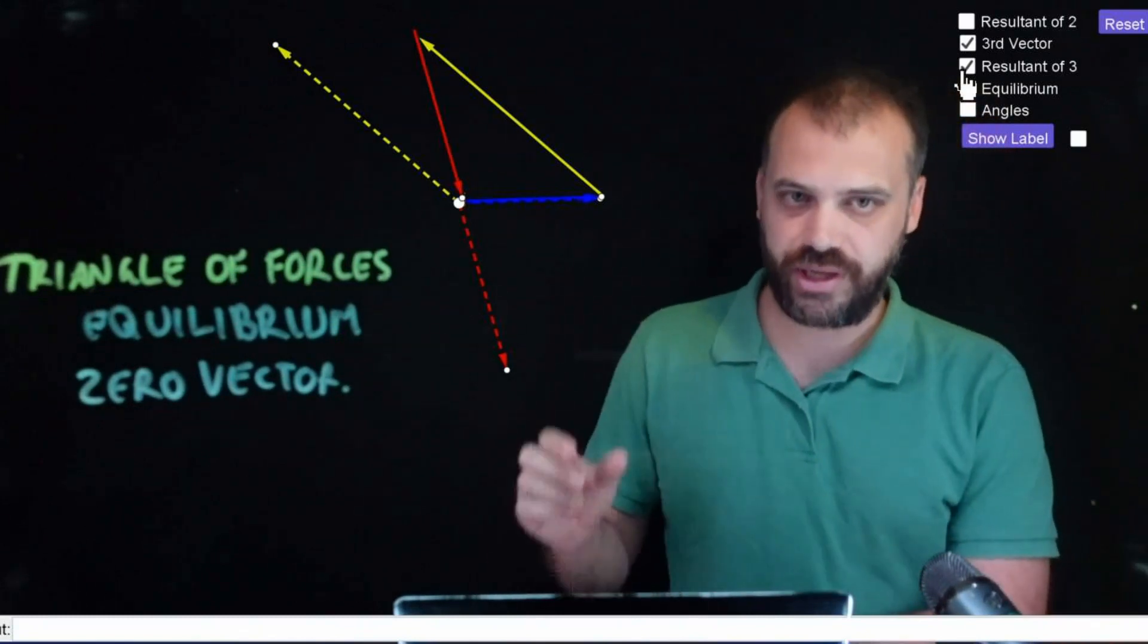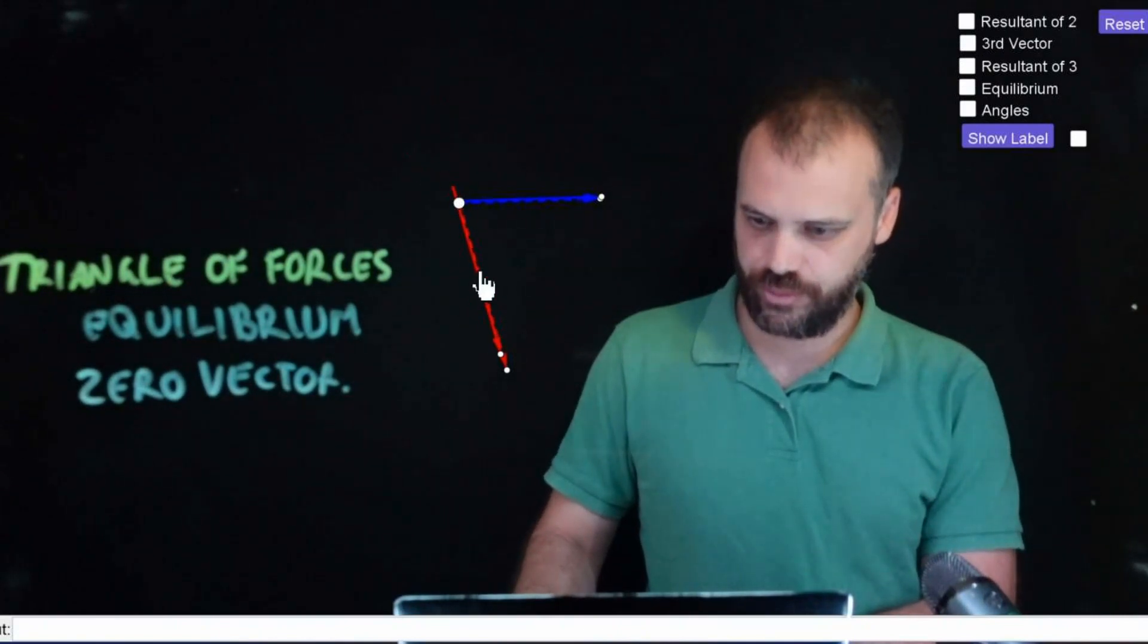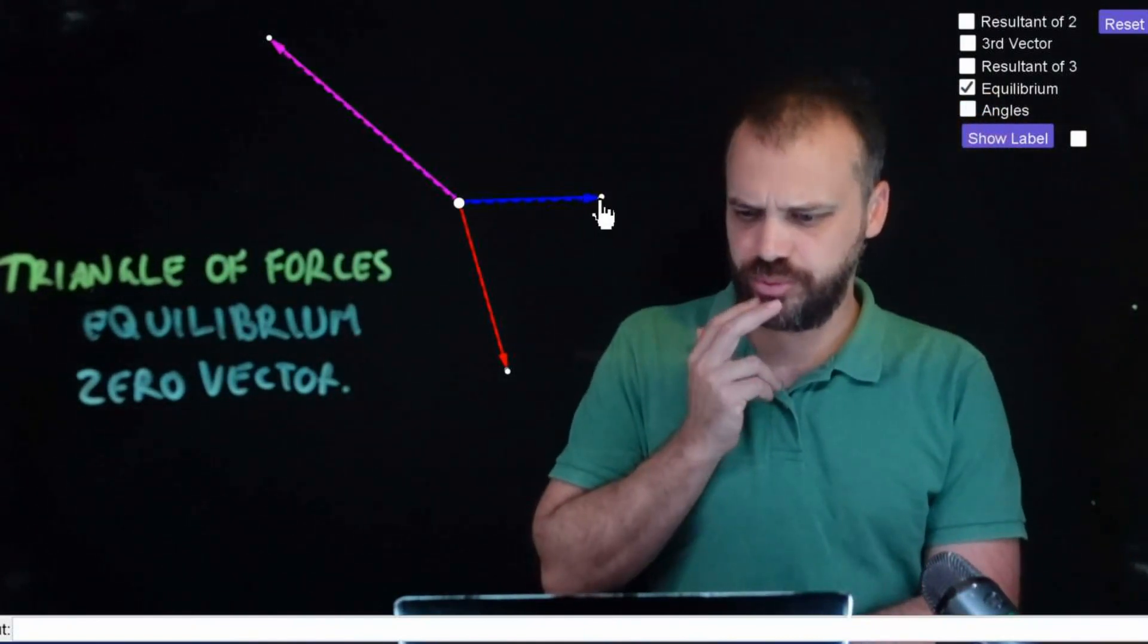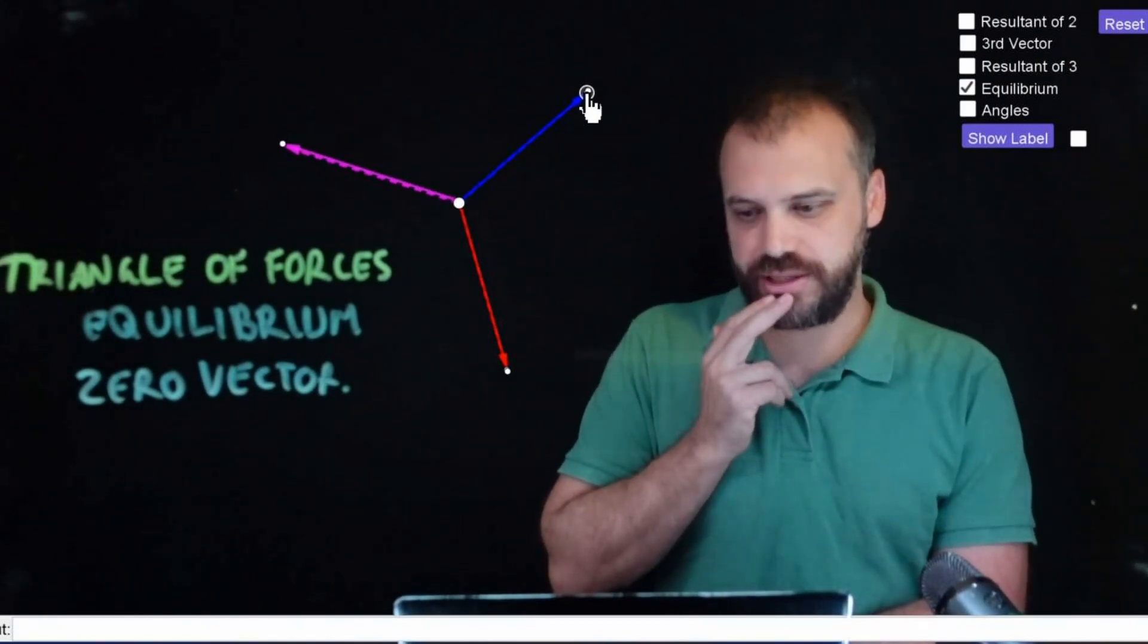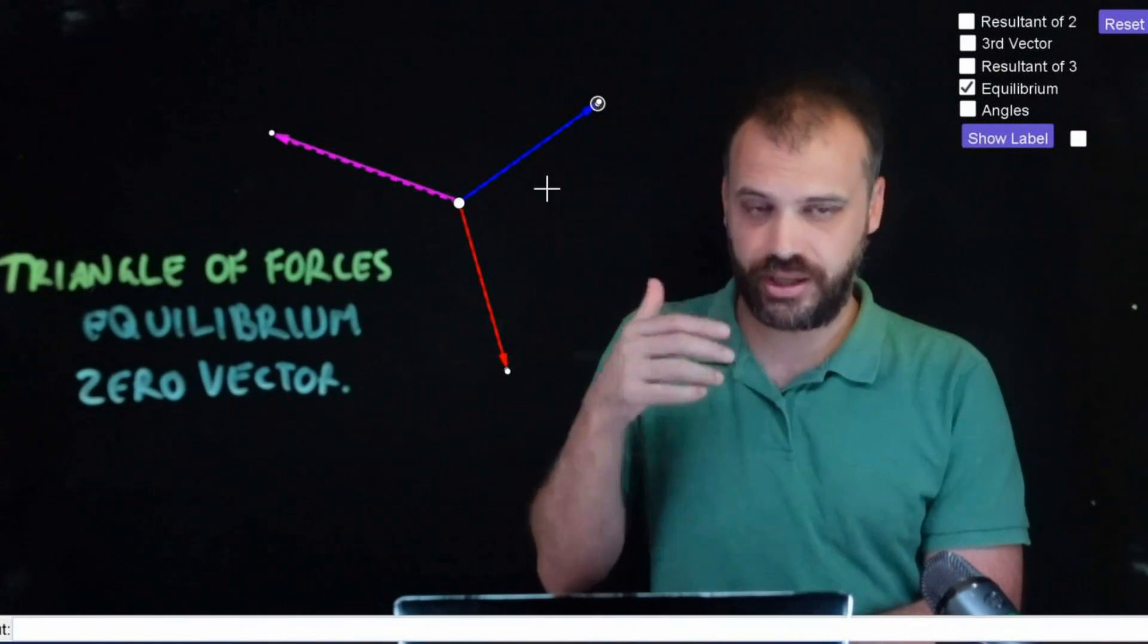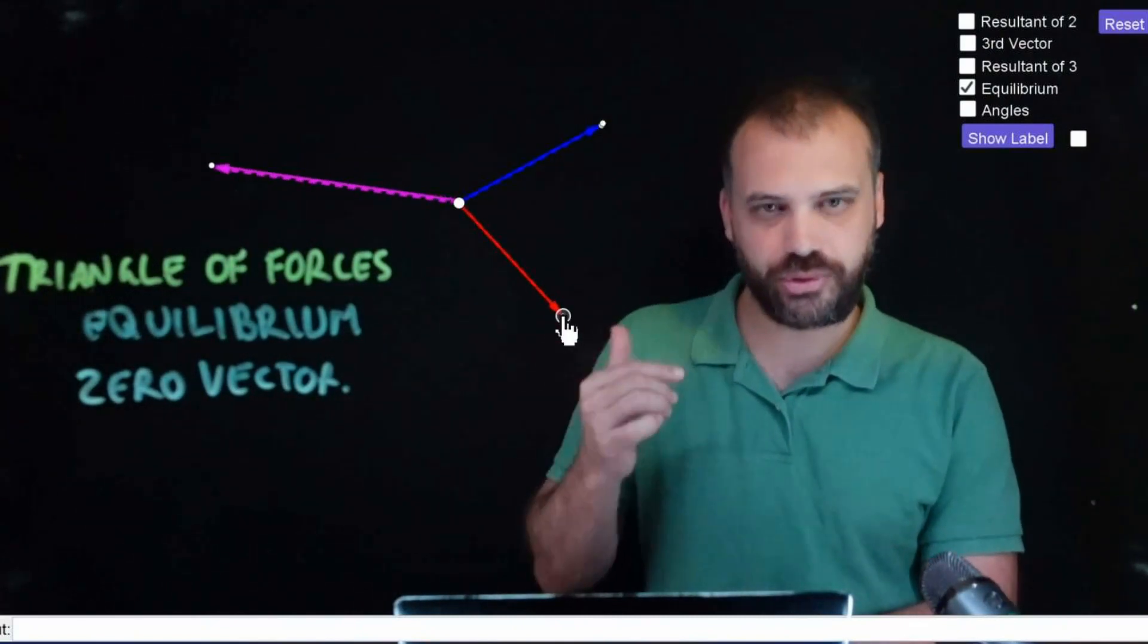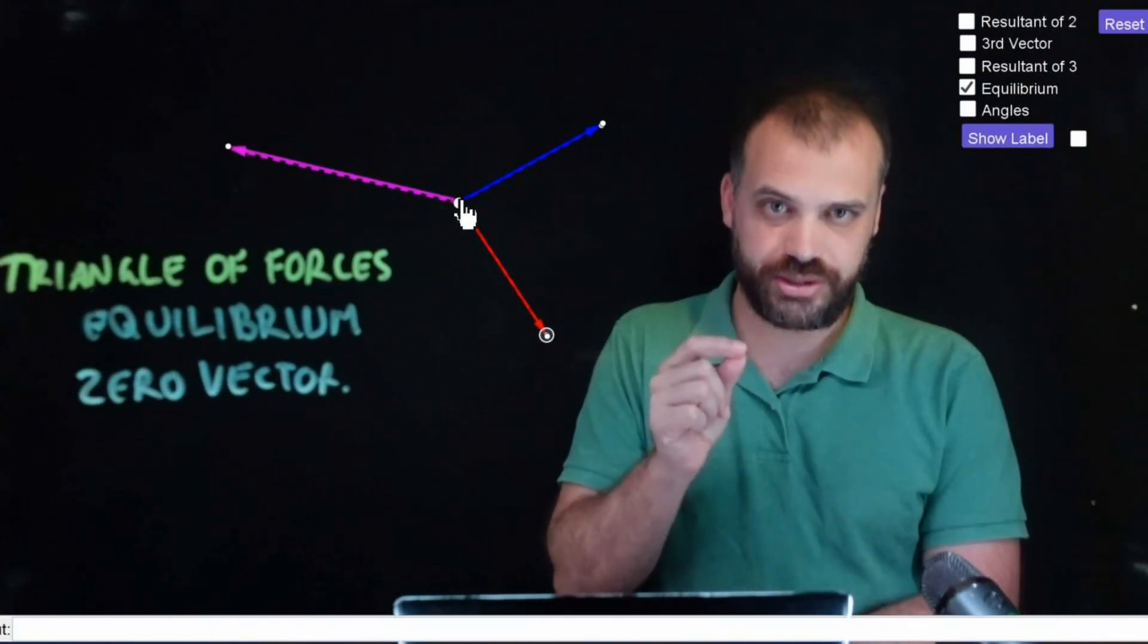Now, I've set up a little bit of an equilibrium setup here. If I get rid of these ones here and put this back where it was and I click this equilibrium button, what my applet now is doing is I can move the blue one or the red one to wherever I want. And the purple one creates my third vector that allows this object to be in equilibrium. What I'm saying here is that it doesn't matter where I move the blue or the red, the purple compensates so that we get a triangle of forces, an object in equilibrium.